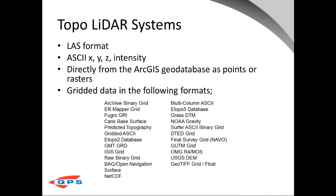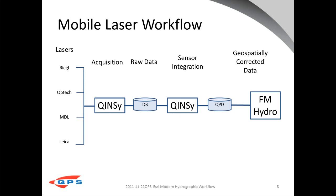For Topo LiDAR systems, we're normally dealing with the data that comes from them. We can take point data and create digital terrain models — that's LAS format and ASCII format — or directly out of an ARC geodatabase if you have that. And if it's already gridded data, already just a terrain model in another format, we can take those formats, georeference them, and create the 3D models.